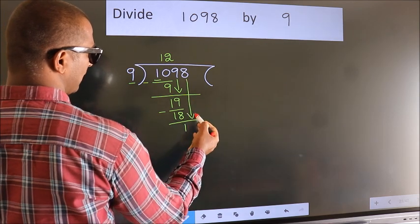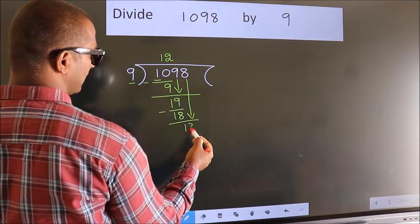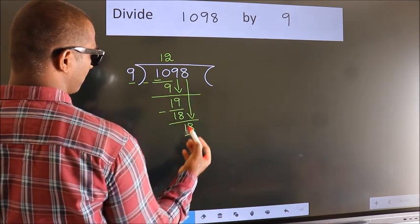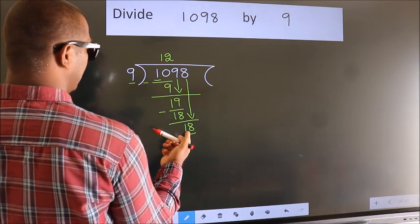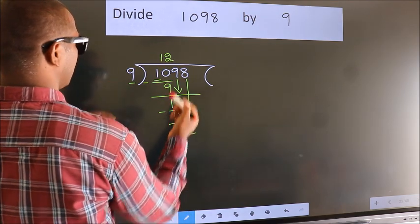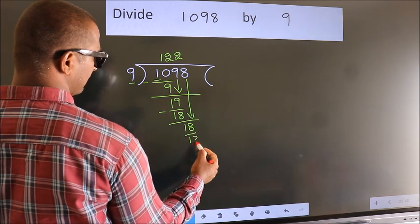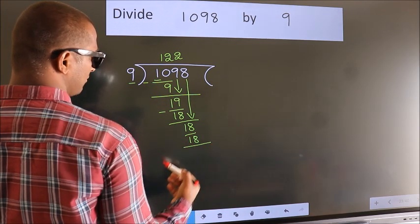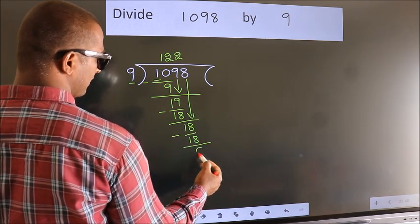bring down the beside number. So, 8 down. So, 18. When do we get 18? In the 9 table, 9 twos, 18. Now we subtract. We get 0.